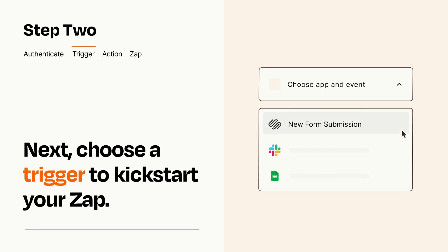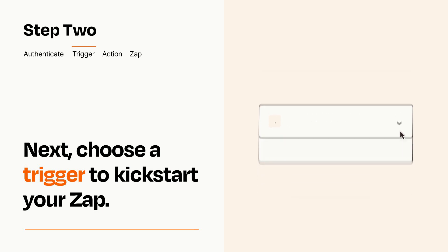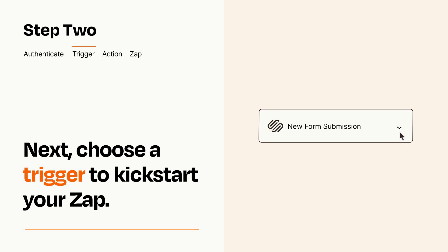Now let's set up your trigger, which is the event that starts your Zap. Pick the trigger event that you want from the list. When you set up this step, your Zap will pull in test data from your trigger app that you'll see later when setting up your action app.